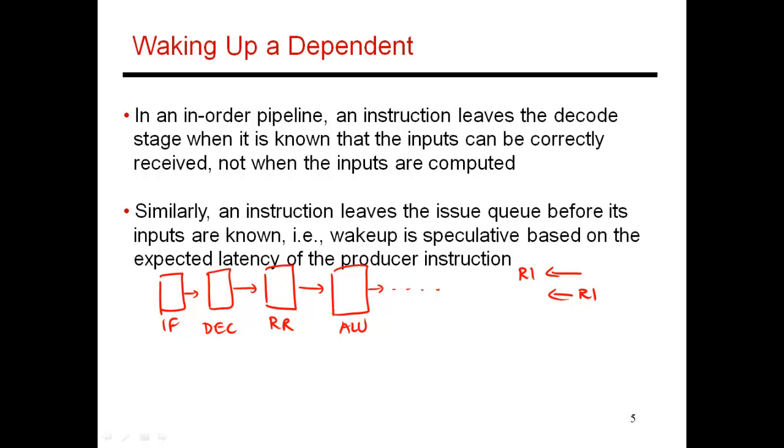If you look at the producer, it leaves the decode stage. Then it doesn't produce a result right away. It first has to read input operands from the register file. Then one cycle later, it does its number crunching and produces a result. So if the producer leaves decode, which is like the issue queue in my in-order pipeline, it leaves the decode stage in cycle I and it produces a result at the end of cycle I plus 2. Two cycles later is when it produces a result.